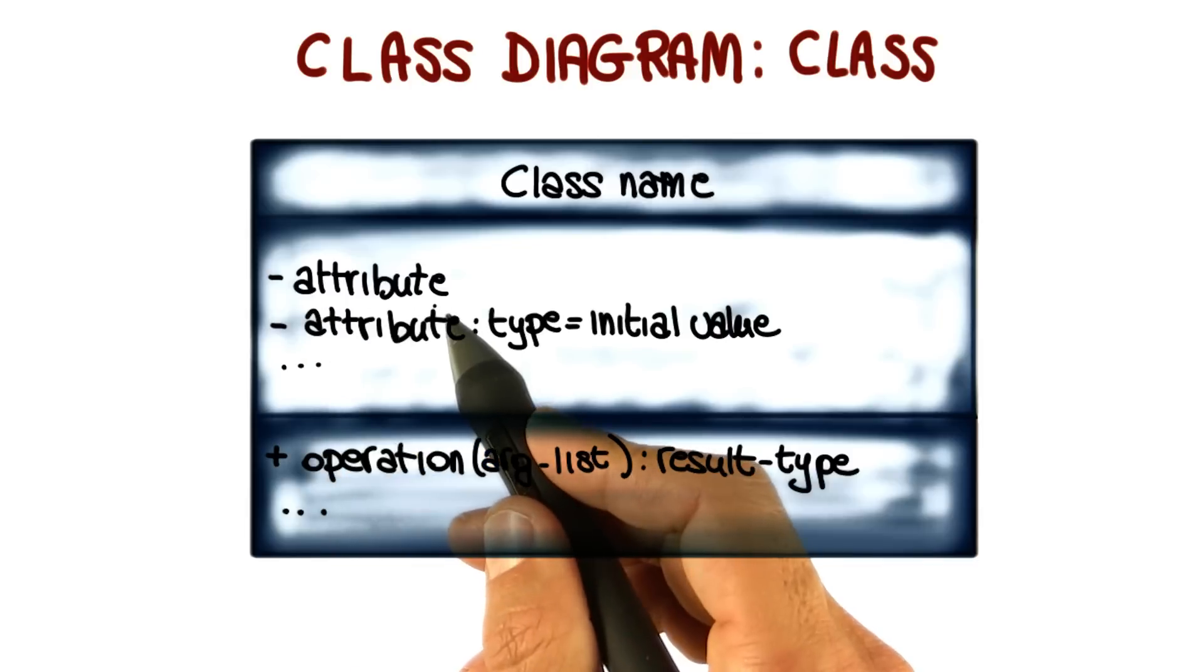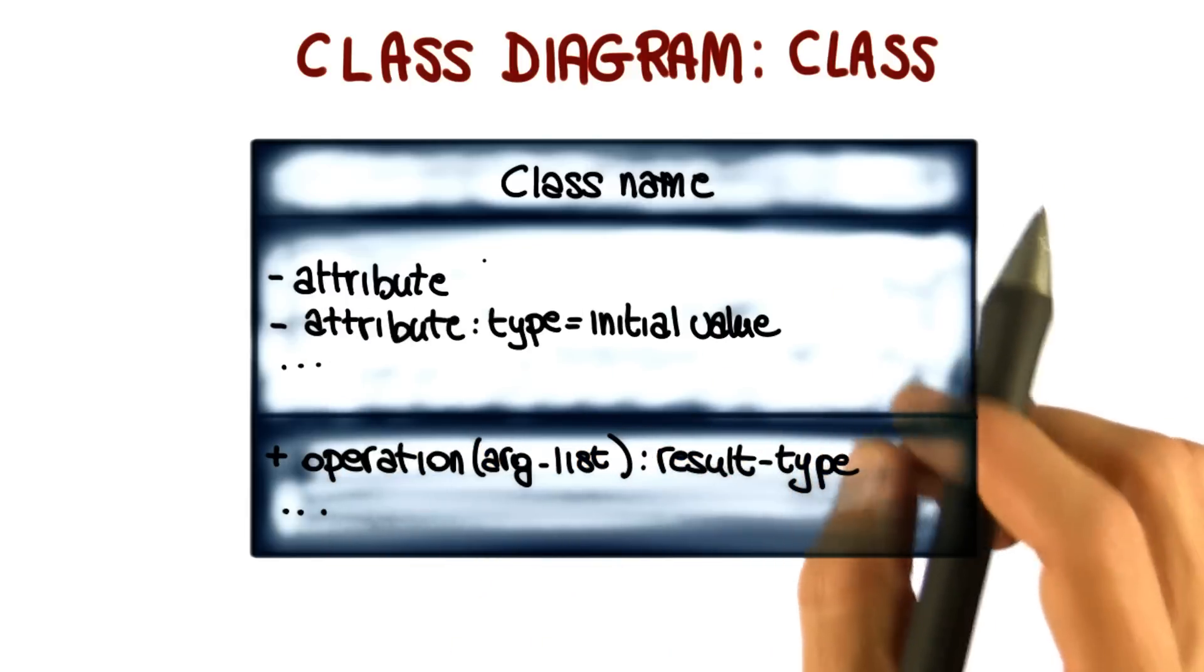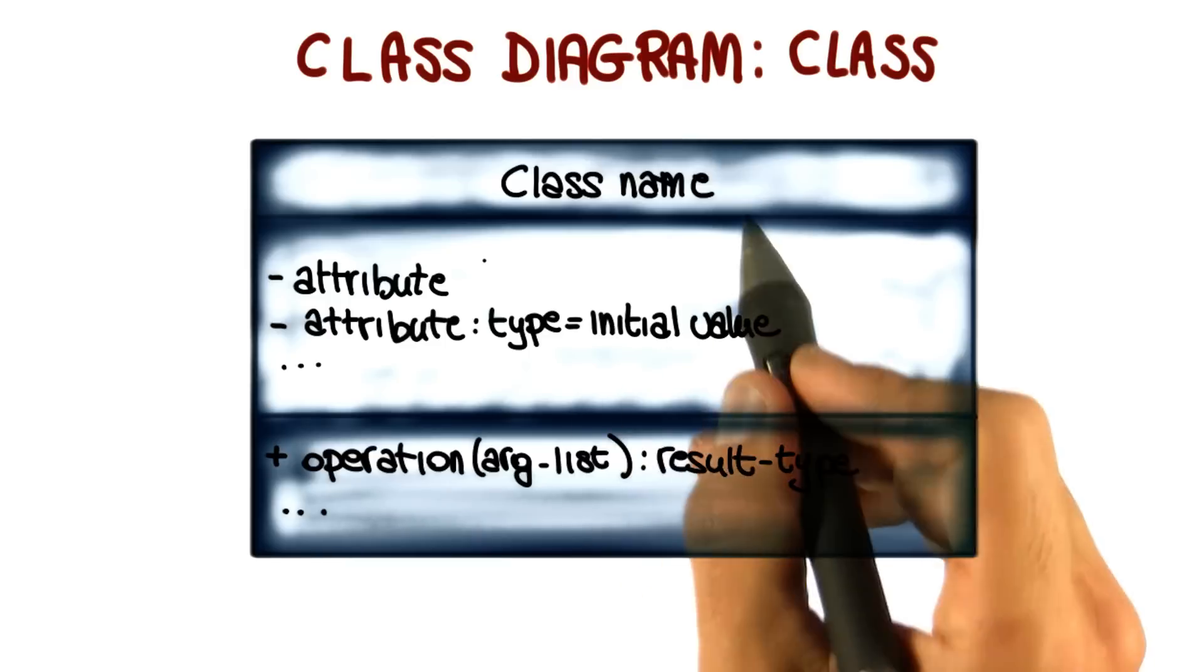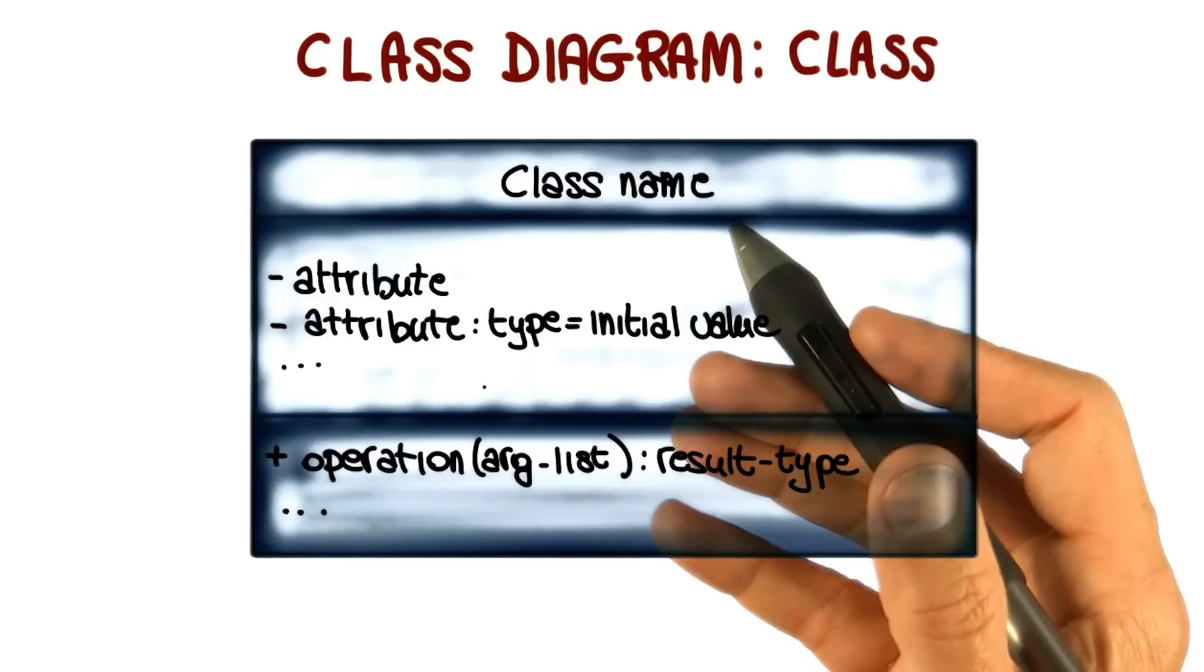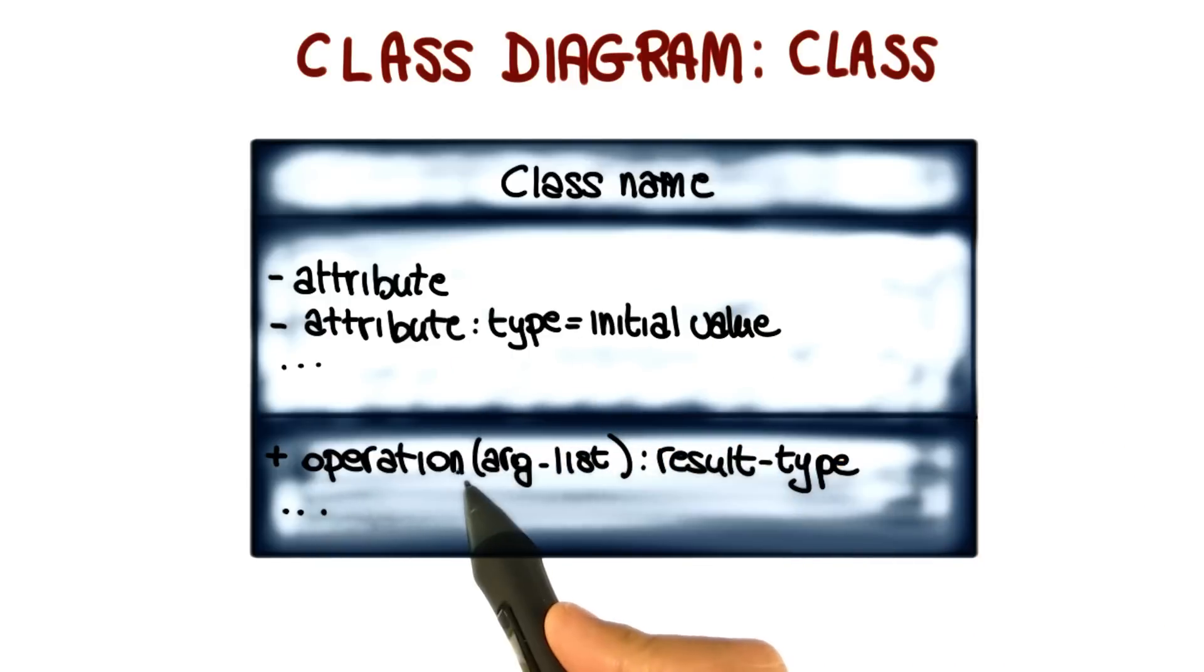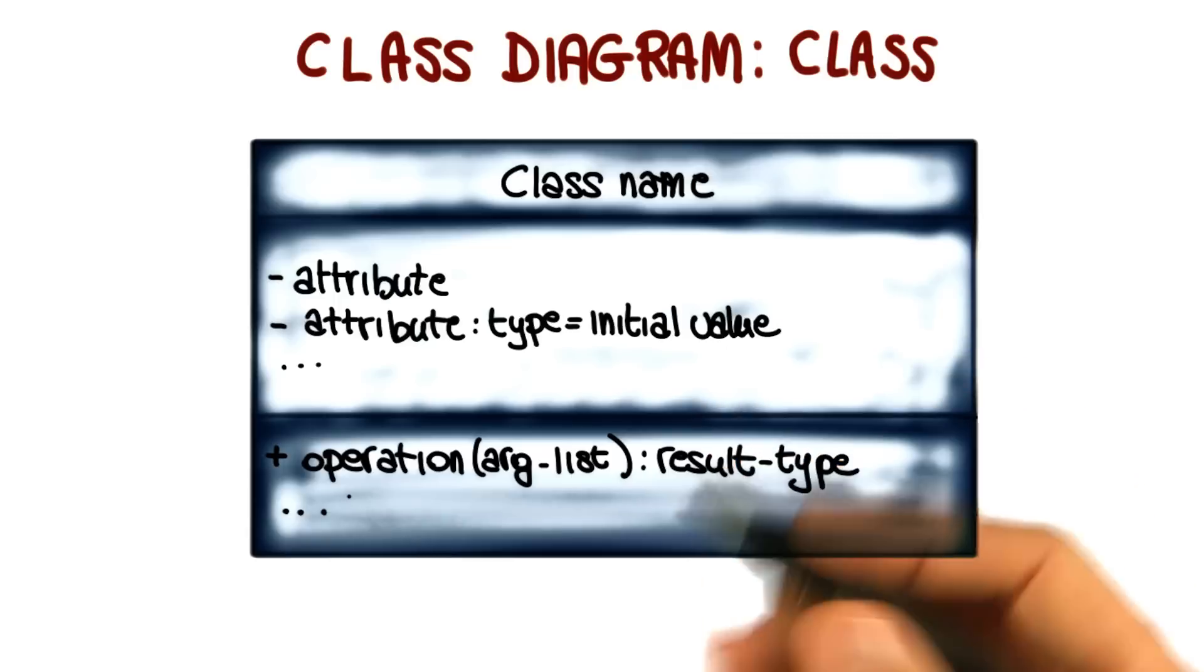Notice that this is what allows us to enforce the information hiding principle, because clients of the class cannot see what's inside this box—what these attributes are. The plus, conversely, indicates that this is a public operation, something that is visible outside the class.